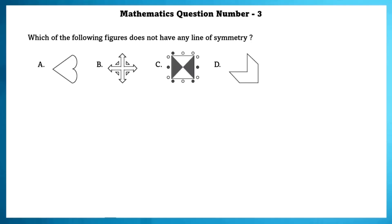Mathematics question number 3. Which of the following figures does not have any line of symmetry? In figure C, if one circle was shaded, then this figure would be symmetrical. But as it is not shaded, it is not symmetrical.